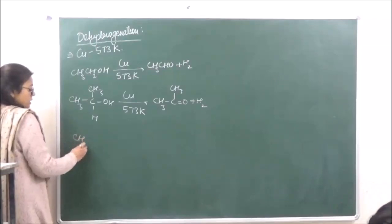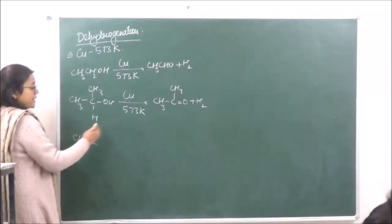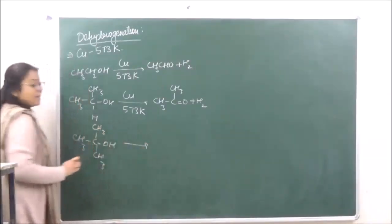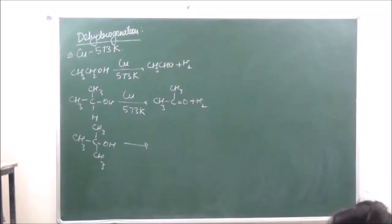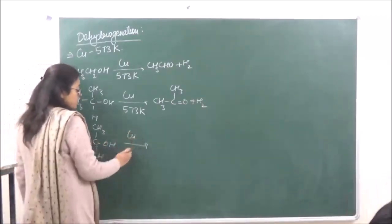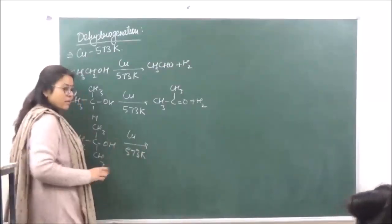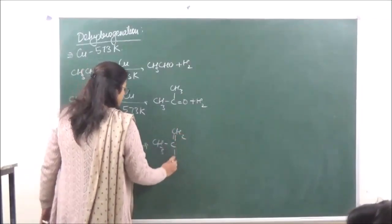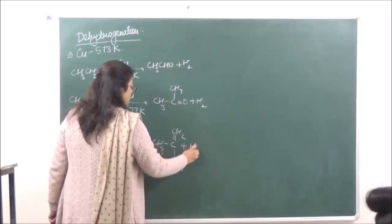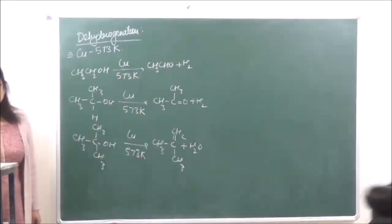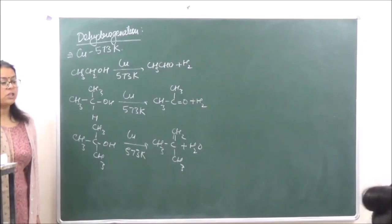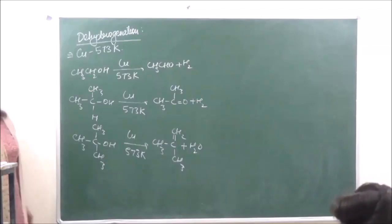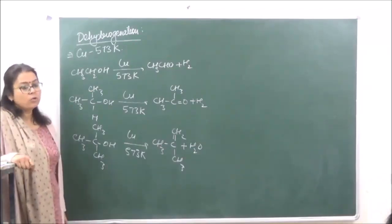But when we are taking a tertiary alcohol, it prefers undergoing dehydration rather than dehydrogenation, because of the bulkier CH₃ groups present. So when reacted with copper at 573 Kelvin, this gives us CH₃C double bond — an alkene — plus water. So it preferably undergoes dehydration. This property is used to distinguish between primary, secondary, and tertiary alcohols.